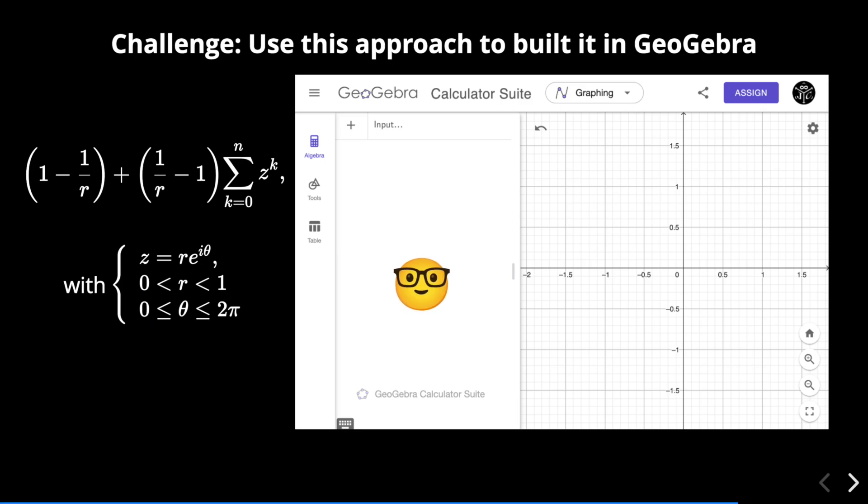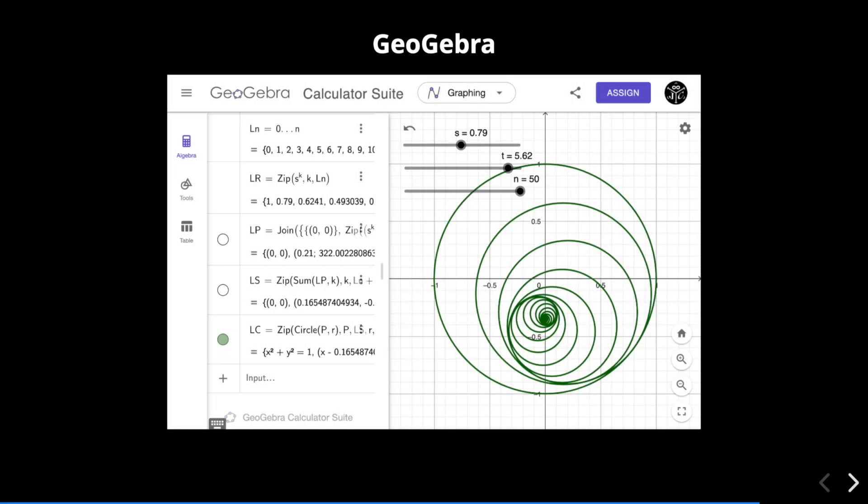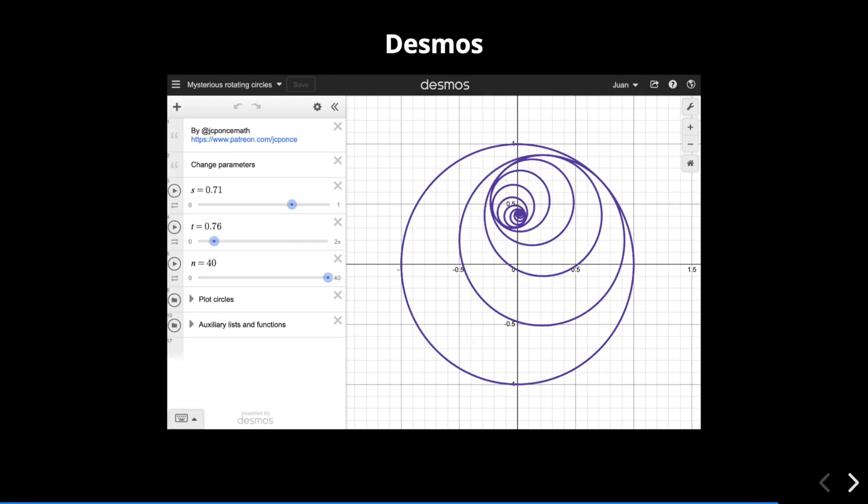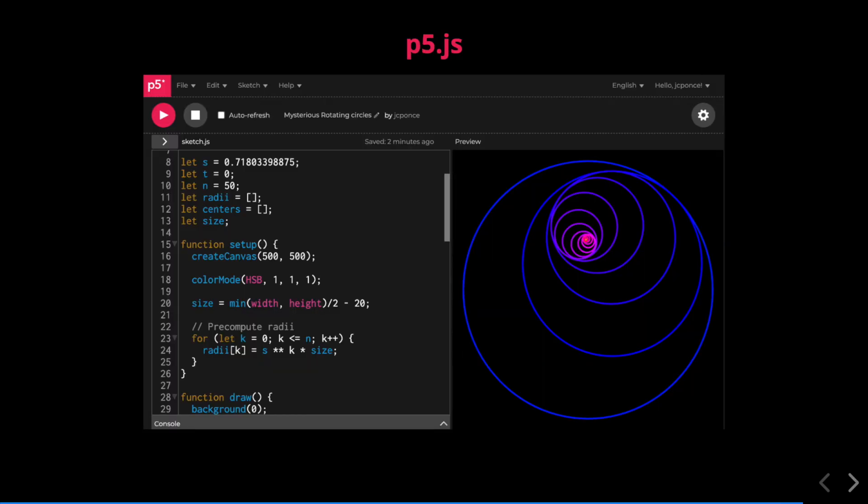By the way, I used GeoGebra for the initial construction not only because I enjoy working with it, but also because its built-in functions make it easy to create these with just a few lines of code. If you prefer, you can use other mathematical tools or programming languages to achieve similar results, such as Desmos or P5JS.